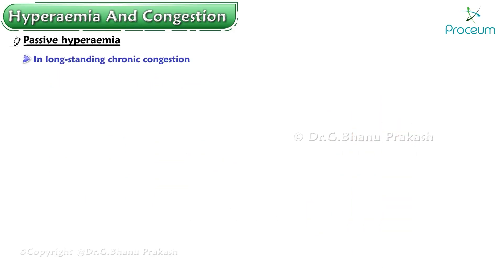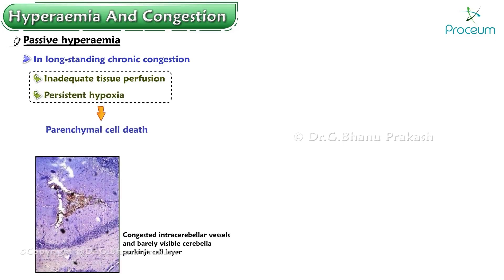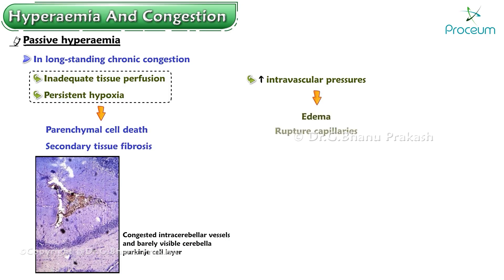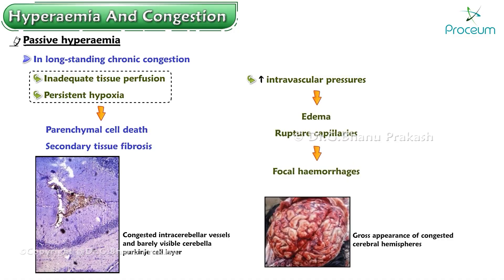In long-standing chronic congestion, inadequate tissue perfusion and persistent hypoxia may lead to parenchymal cell death and secondary tissue fibrosis. The elevated intravascular pressures may cause edema or sometimes rupture capillaries, producing focal hemorrhages.